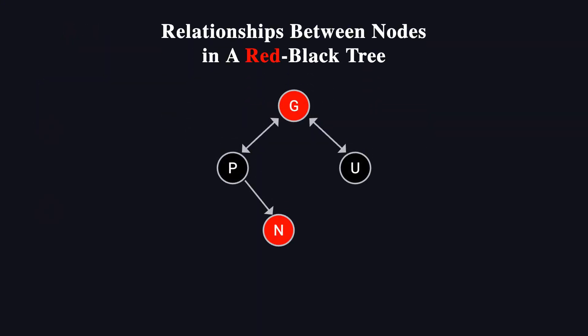Before we dive into fixing violations, let's first define some key relationships between nodes in a red-black tree. N, new, is the newly inserted node. P, parent, is its parent. G, grandparent, is its grandparent.